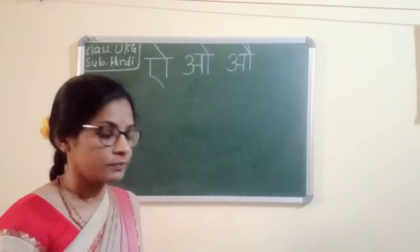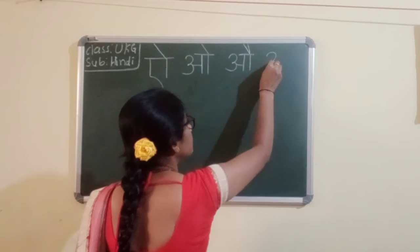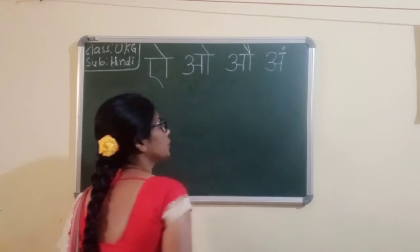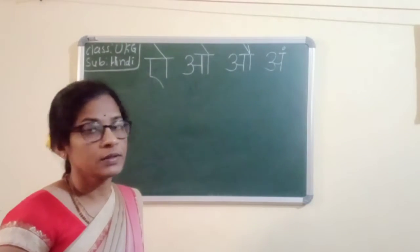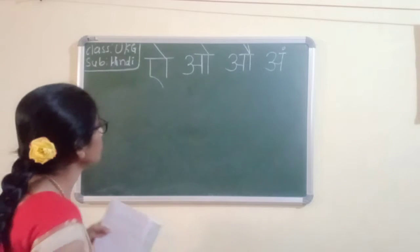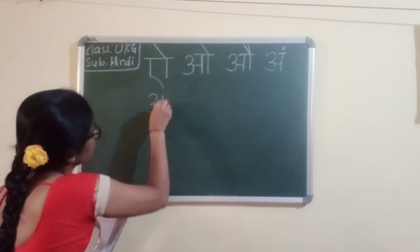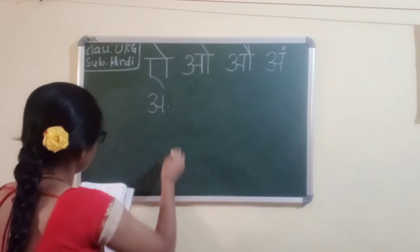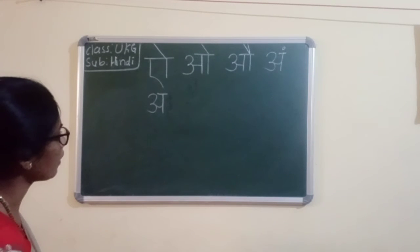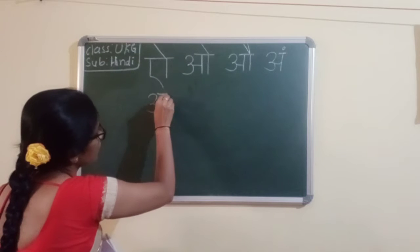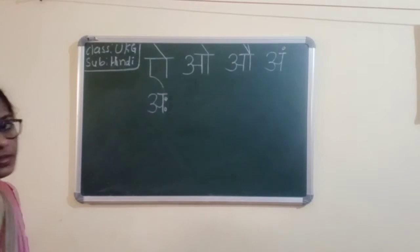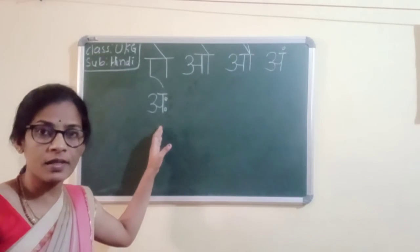Next letter — Am. You write here O, and then you write up with a smart zero and smart point. This is Am. And next — Aha. Look at here, you write A, and you write small dots, small blue dots. After a standing line here, you write small dots here. This is called Aha. What is this? Aha.